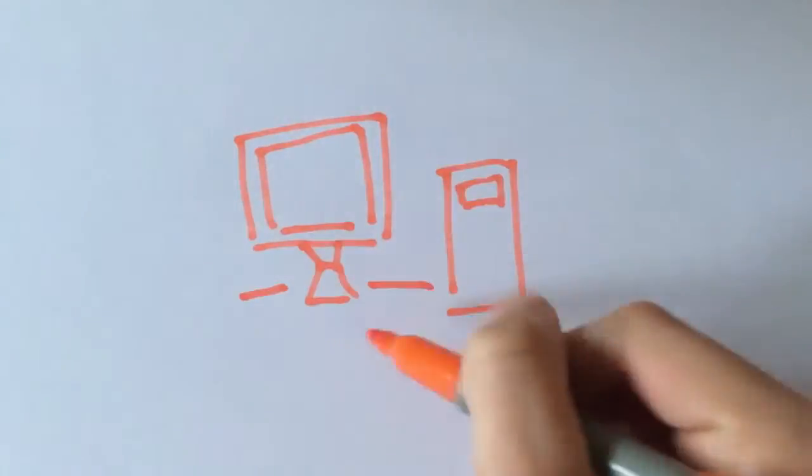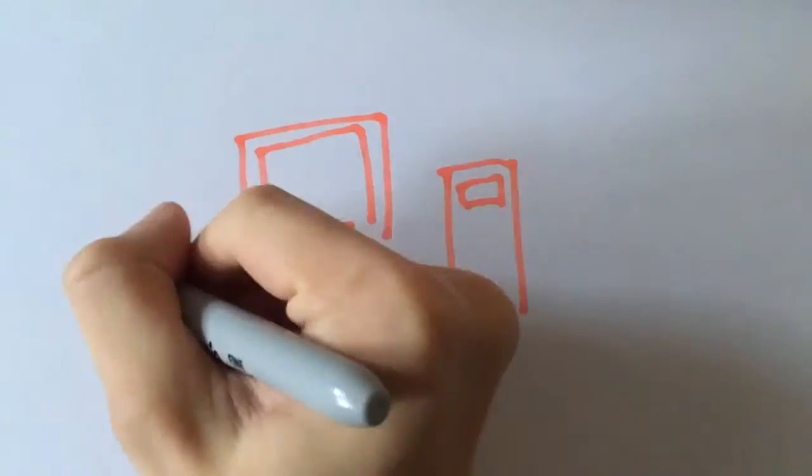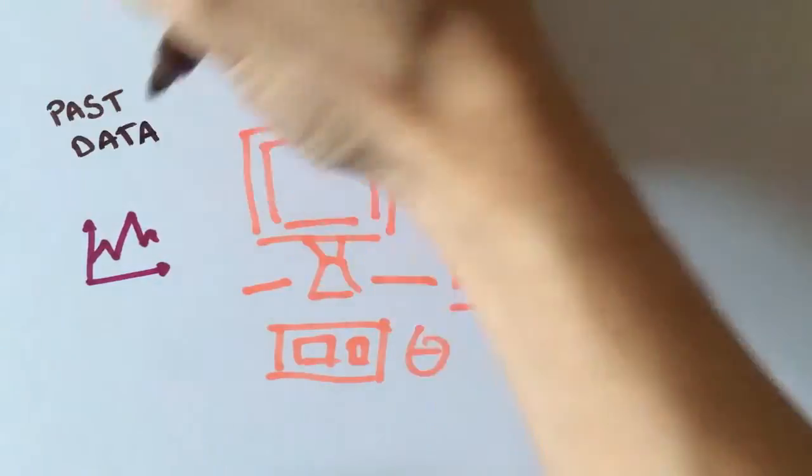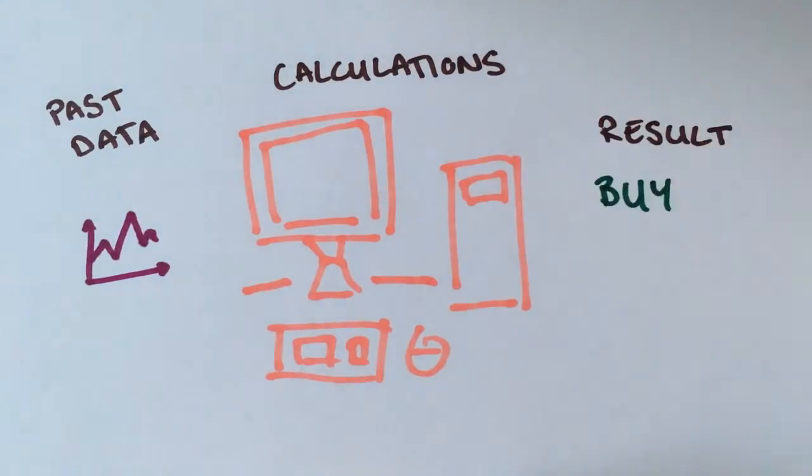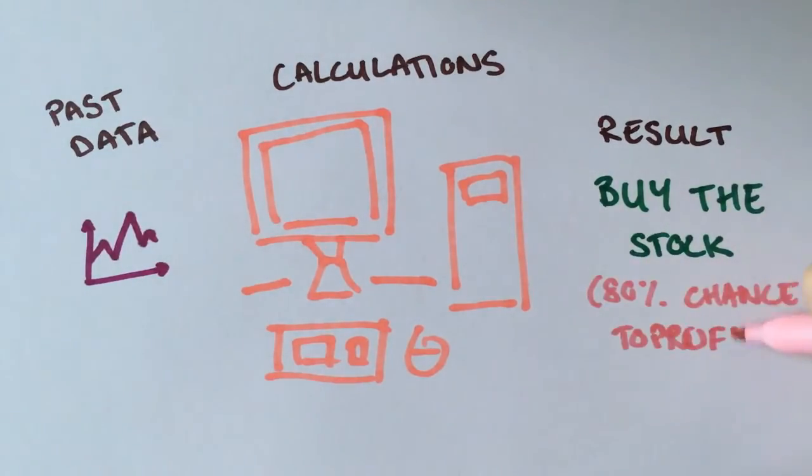So in short, the process uses information about how the stock behaved in the past to predict where it might end up in the future, and when done by a computer, this can be carried out very efficiently.